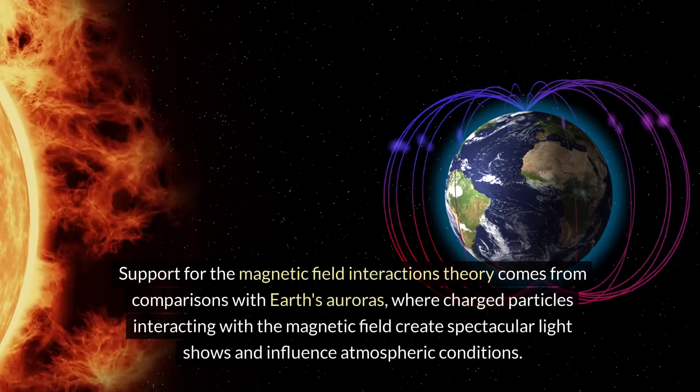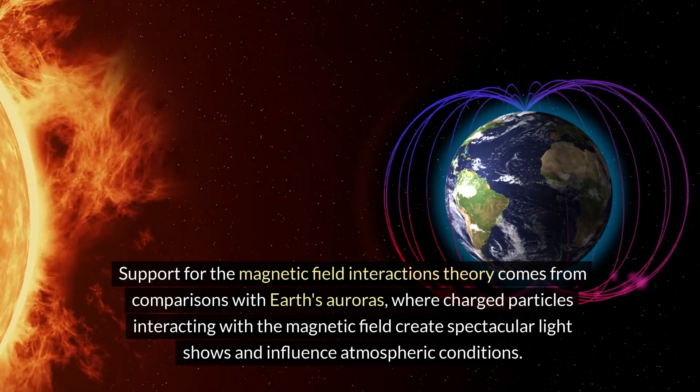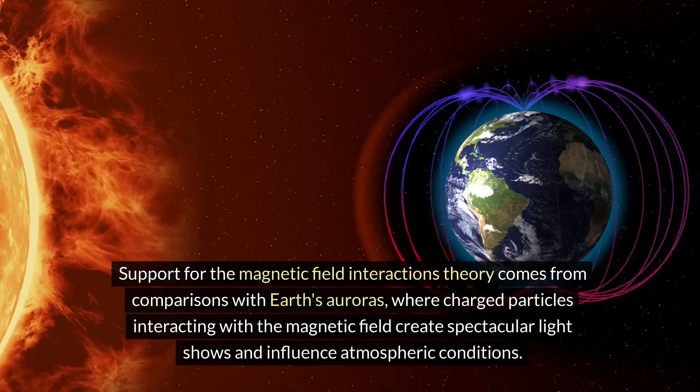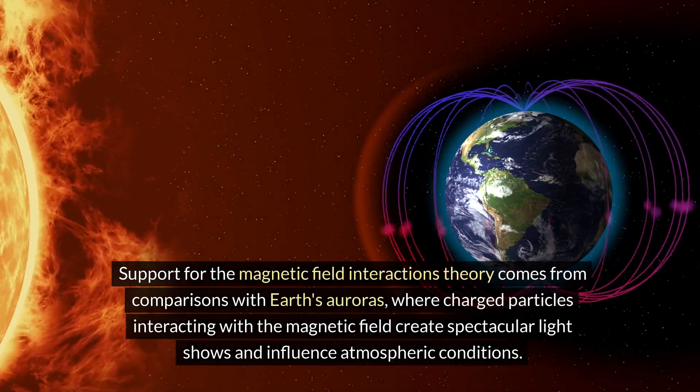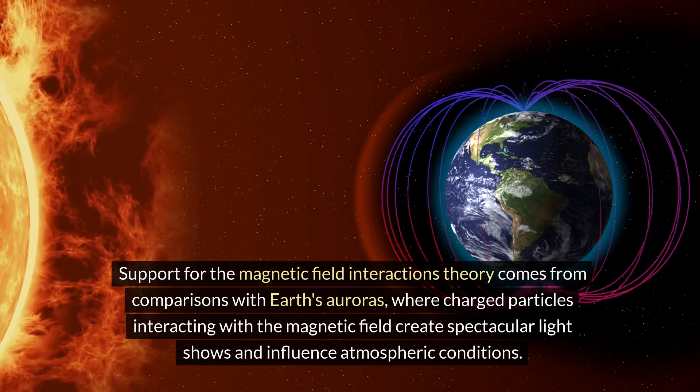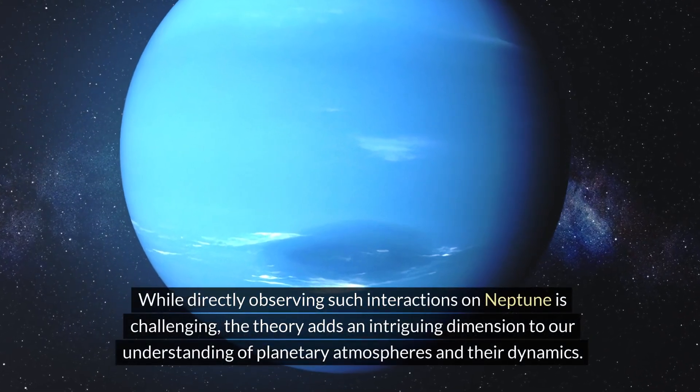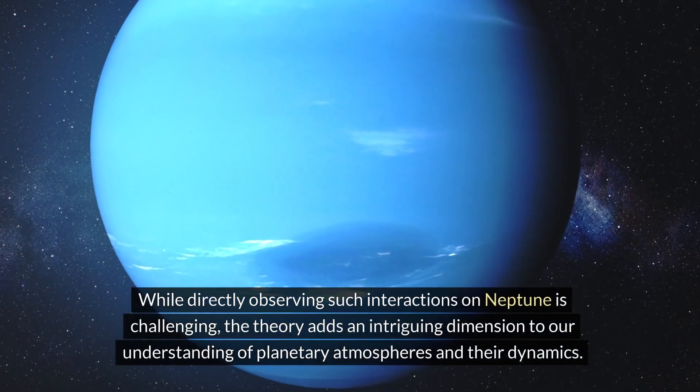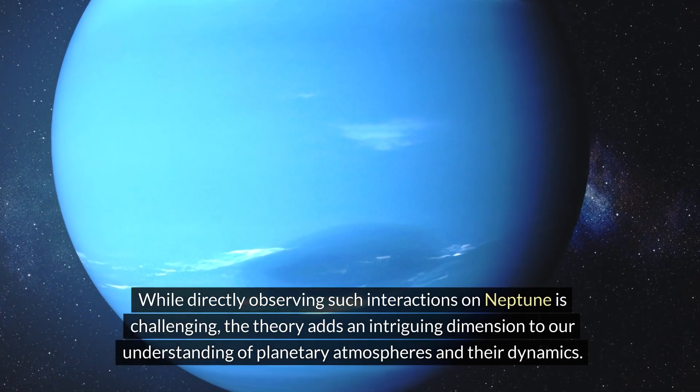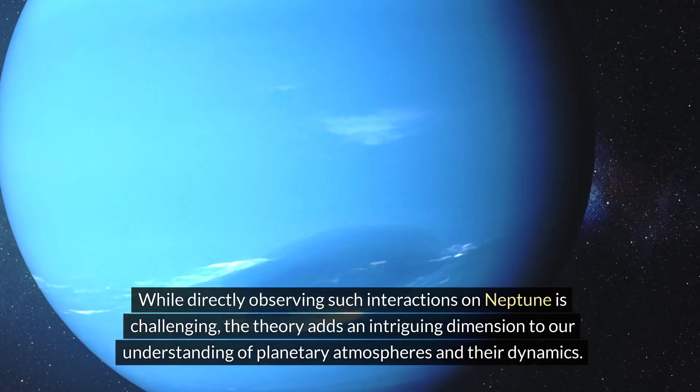Support for the magnetic field interactions theory comes from comparisons with Earth's auroras, where charged particles interacting with the magnetic field create spectacular light shows and influence atmospheric conditions. While directly observing such interactions on Neptune is challenging, the theory adds an intriguing dimension to our understanding of planetary atmospheres and their dynamics.